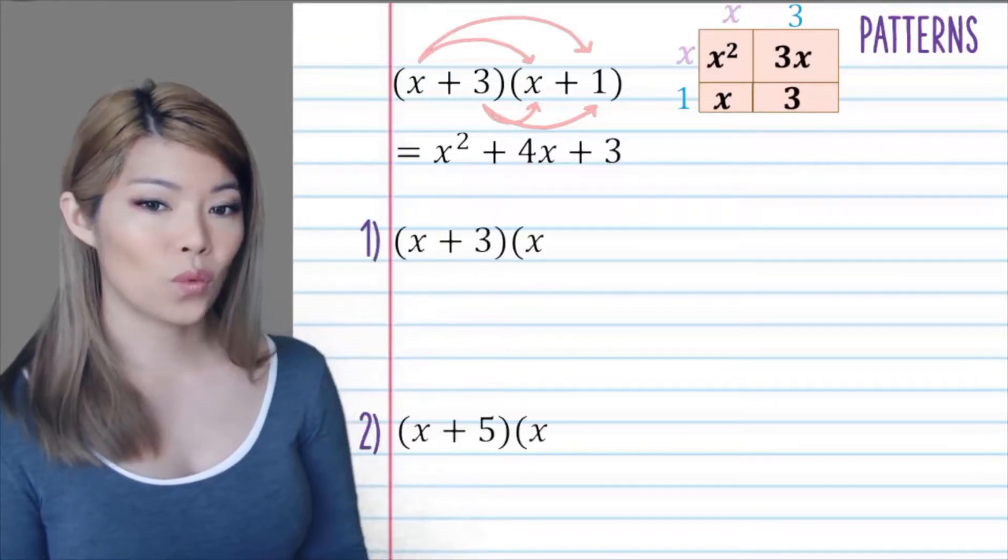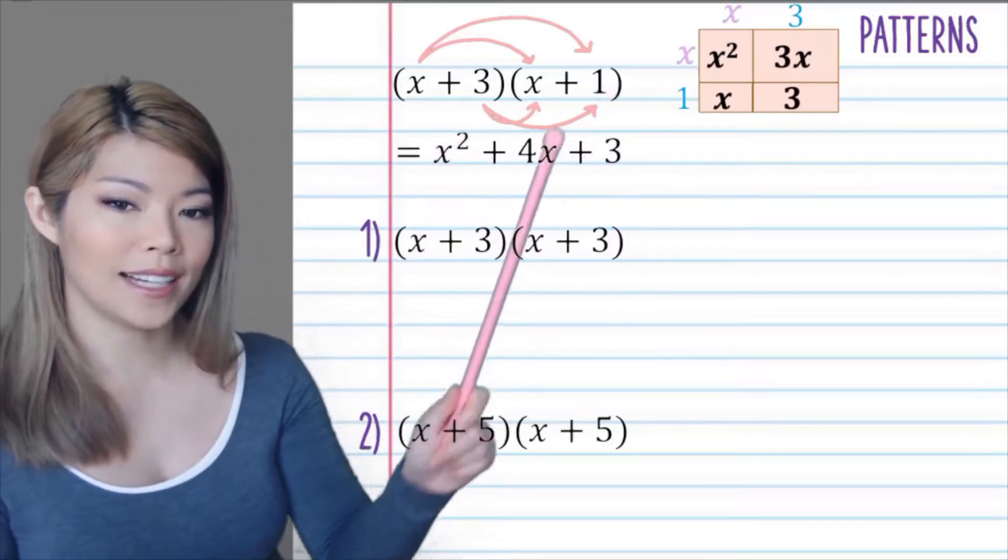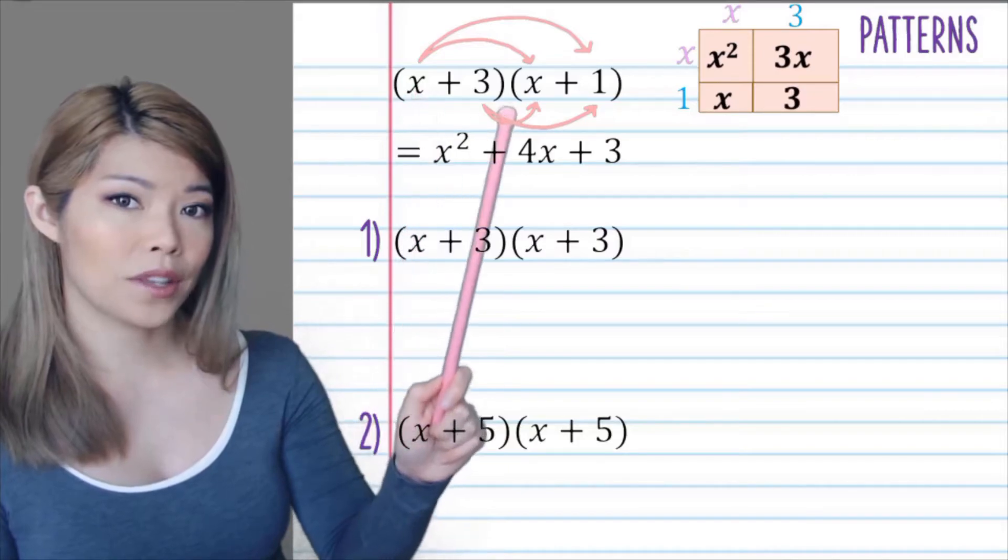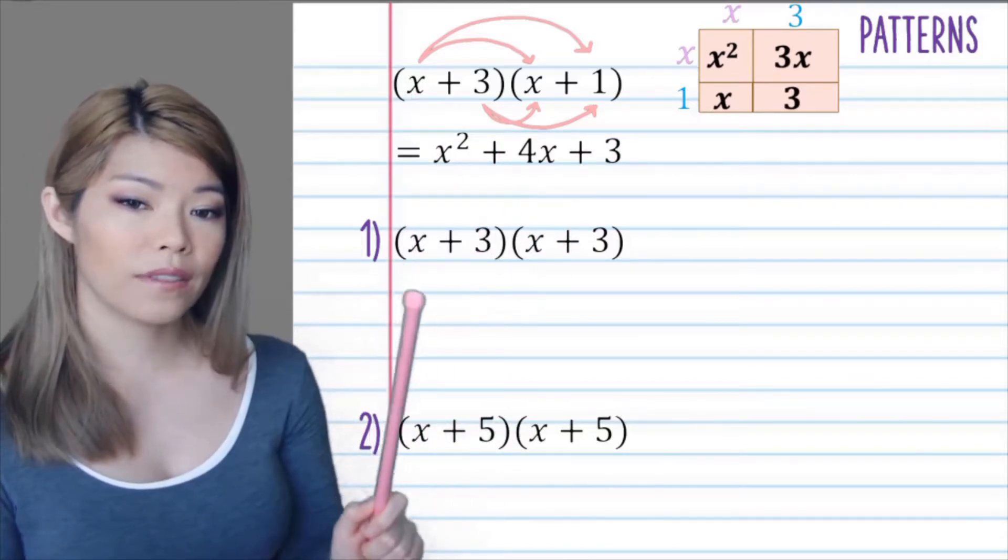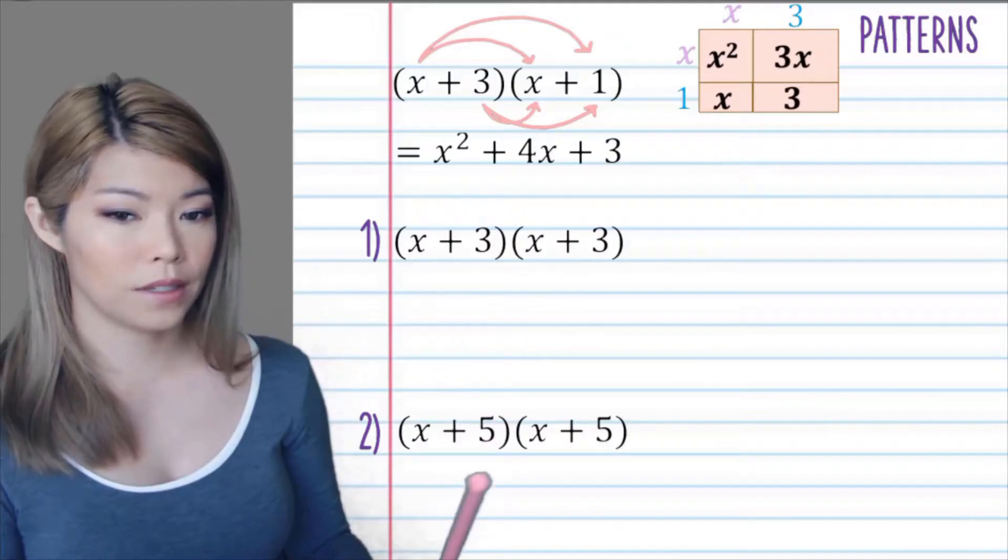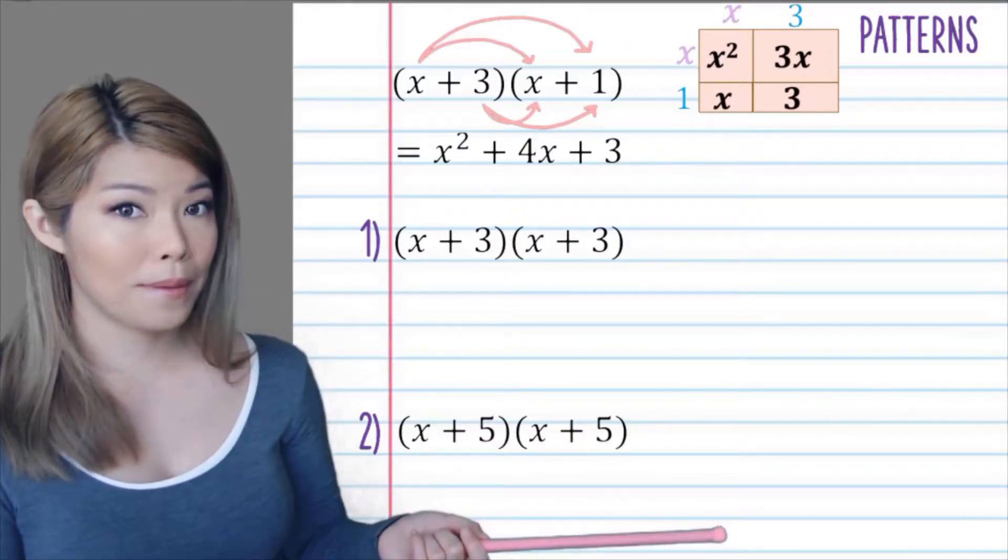What happens when the two factors are identical? So instead of having x plus 3 and x plus 1, what happens if we have x plus 3 and x plus 3, or x plus 5 and x plus 5? Would there be a pattern?